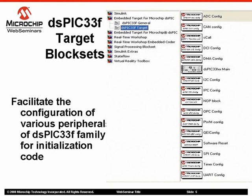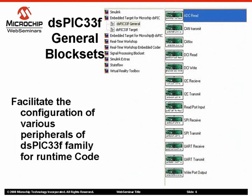The DSPIC 33F Main block is an essential component for every application model that you create. This allows you to configure clocks, oscillators, etc. The picture here shows the DSPIC 33F General Library. You can pull these blocks into your model and configure them as per your requirements. Blocks found under this library generally have one or more input-output ports, which have to be connected to the appropriate source and sink blocks. For example, the UART transmit block has an input port which accepts a UINT16 or INT16 data type and transmits it on every timer expire event. This timer has to be configured in the DSPIC 33F Main block.